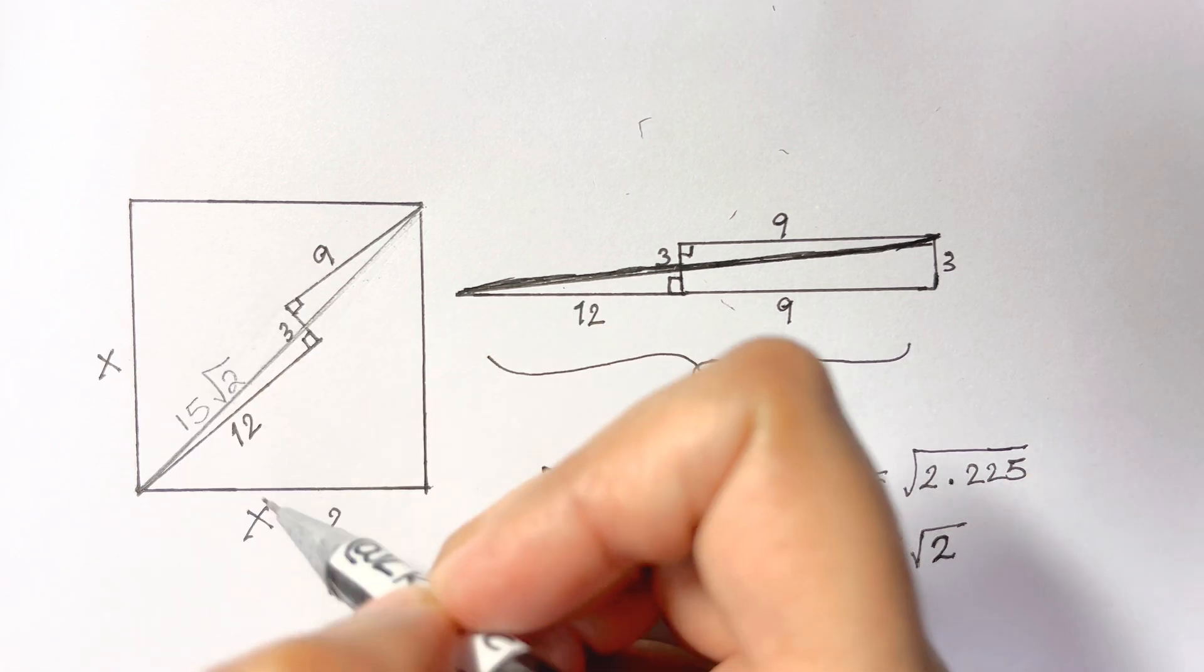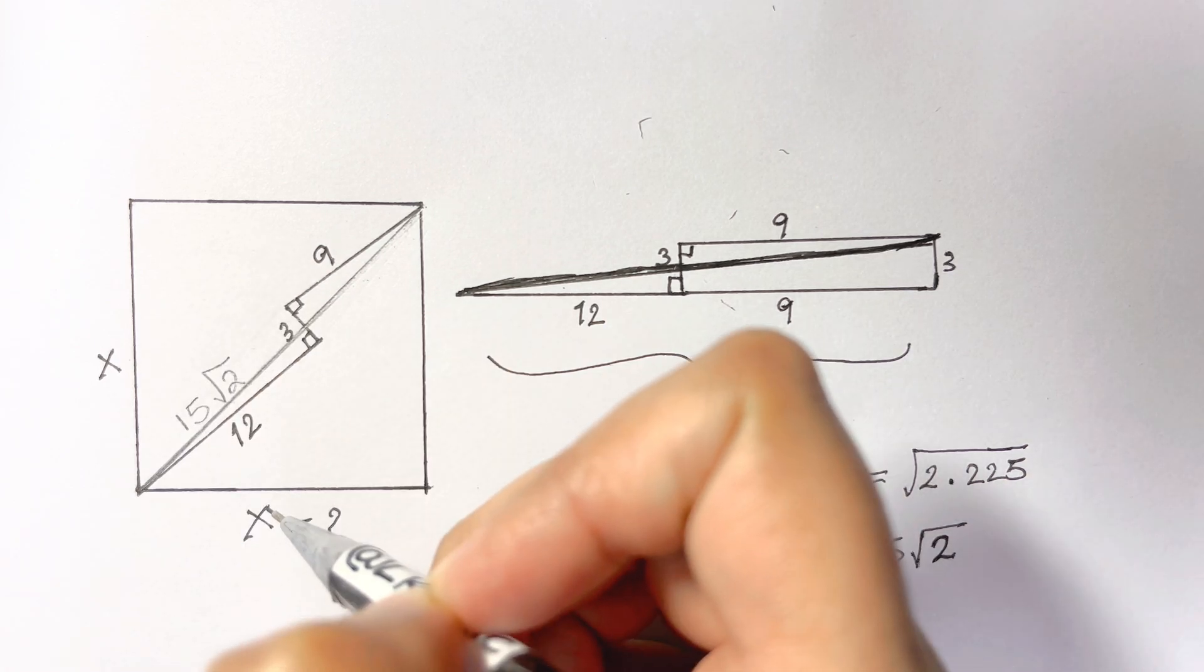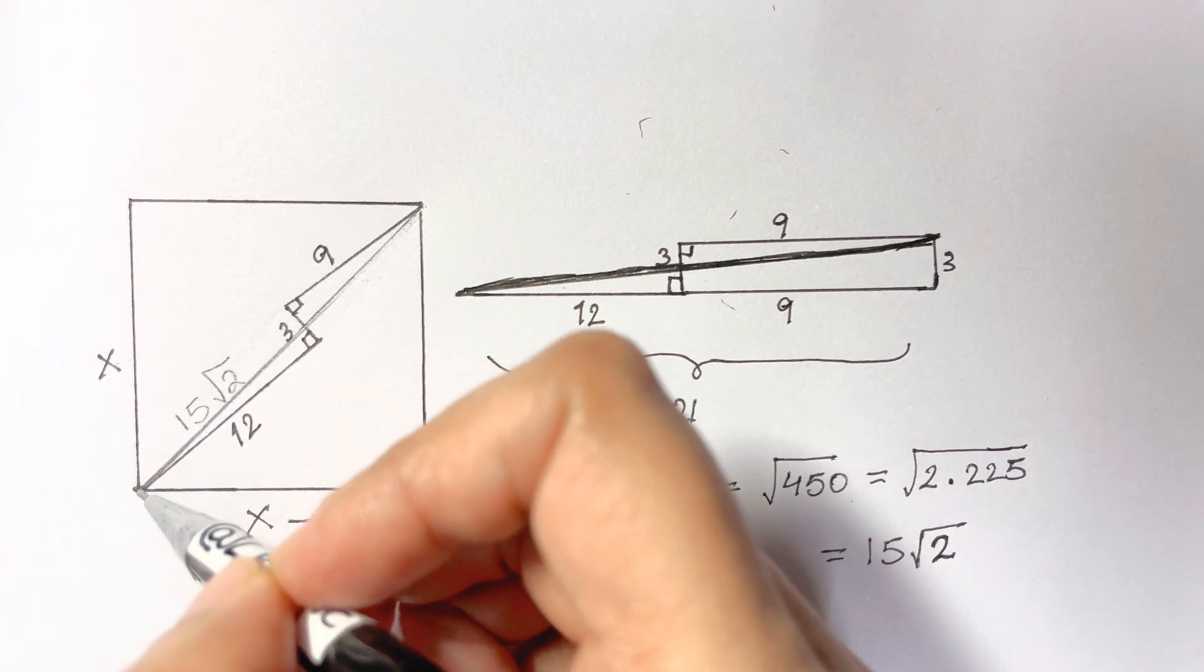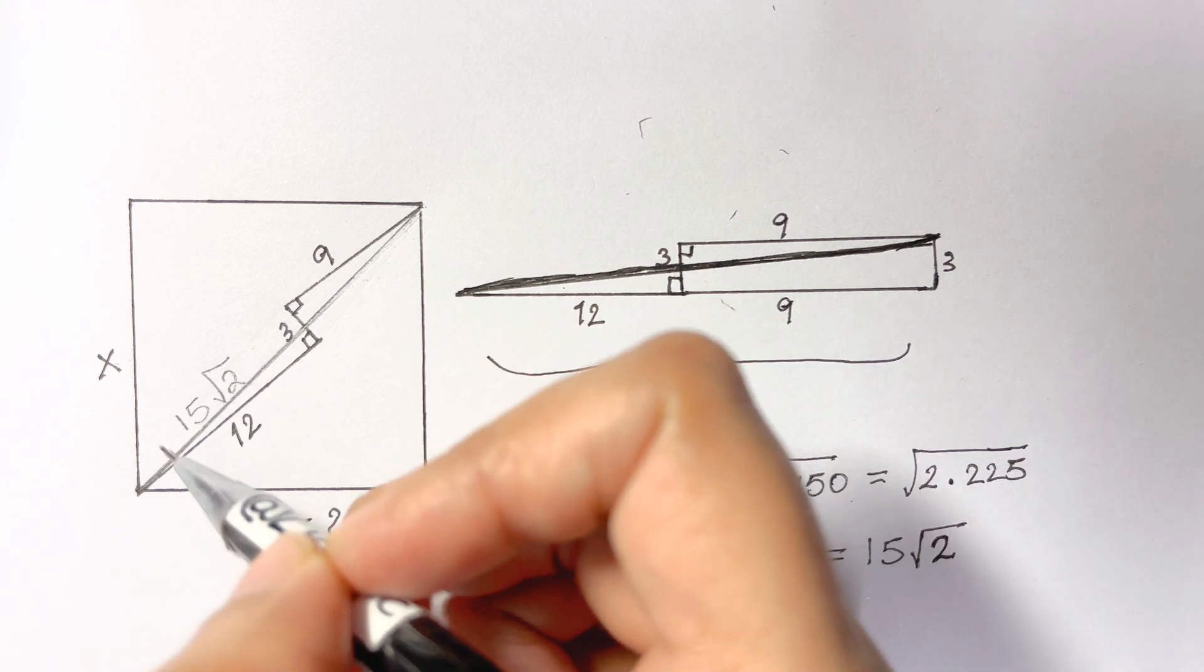But now it is not difficult to find the side of the square. So according to Pythagorean theorem this is x and this is x and this is the hypotenuse.